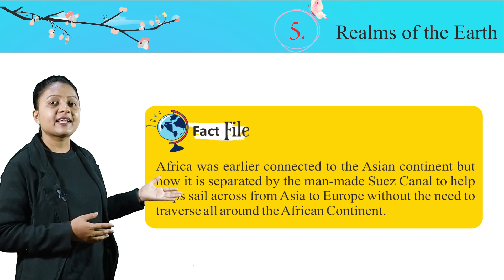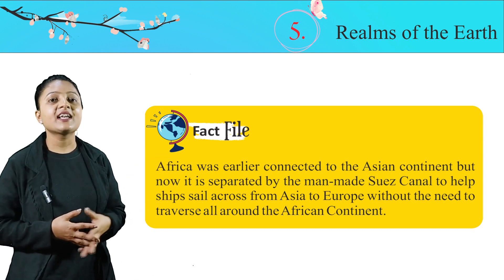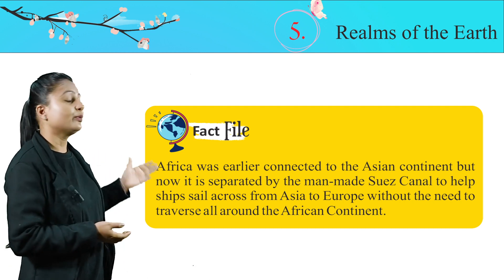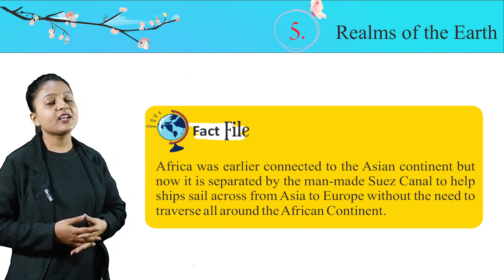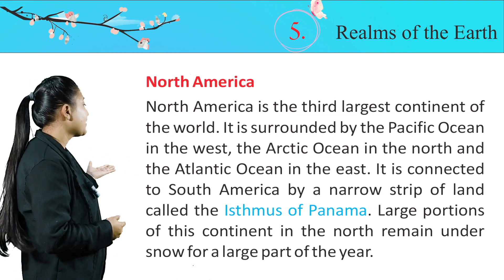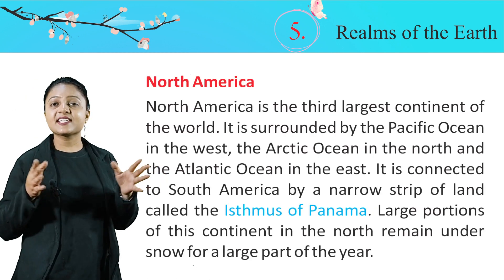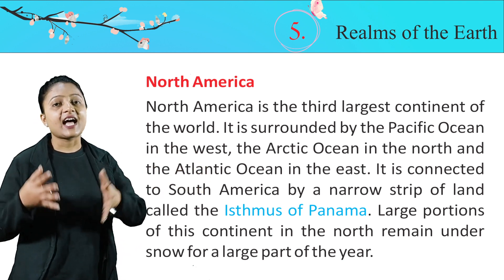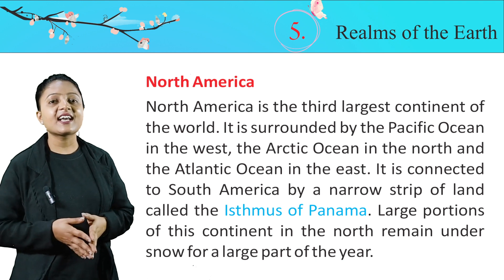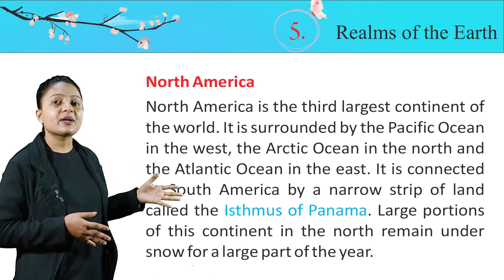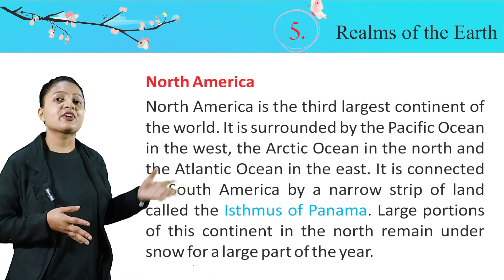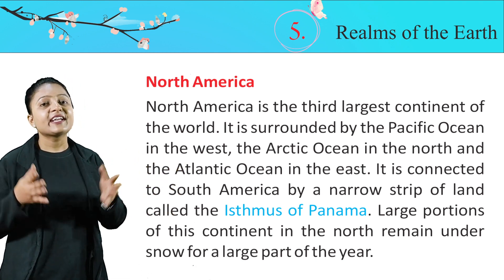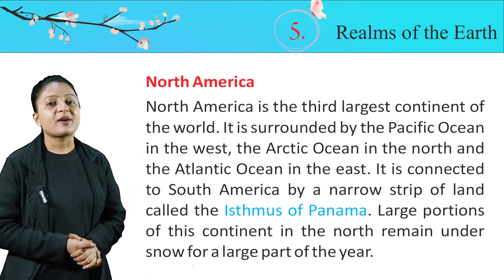Africa is now separated by the man-made Suez Canal to help ships sail across from Asia to Europe without the need to traverse all around the African continent. North America is the third largest continent of the world. It is surrounded by the Pacific Ocean in the west, the Arctic Ocean in the north, and the Atlantic Ocean in the east. It is connected to South America by a narrow strip of land called the Isthmus of Panama. Large portions of this continent in the north remain under snow for a large part of the year.